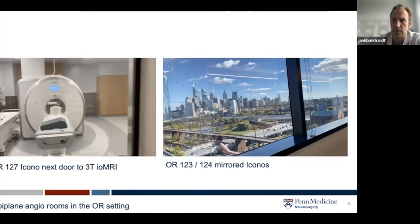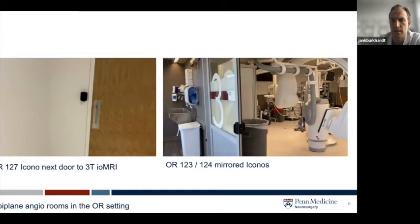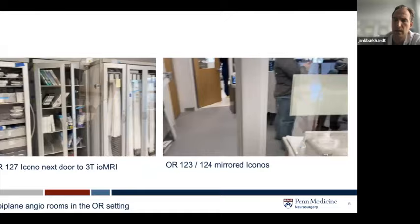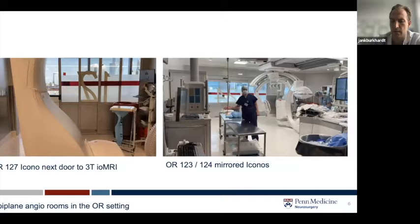This is an overview. On the left you see a room close to an intraoperative three Tesla MRI. On the right are two mirrored biplane rooms—three rooms overall. The rooms on the right are more dedicated for purely endovascular cases but can switch to open as needed. The left one is mainly for open cases but can also go vice versa, or serve as overflow for thrombectomy cases. All three rooms have modern 3D and biplane capacity.